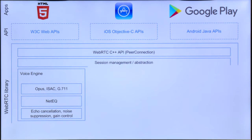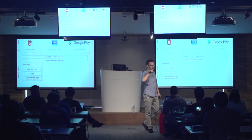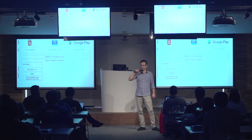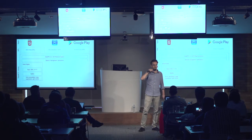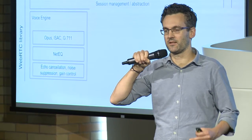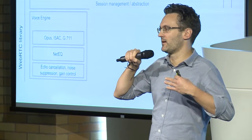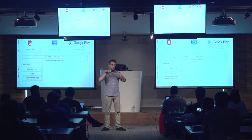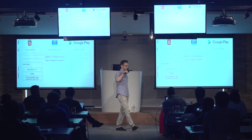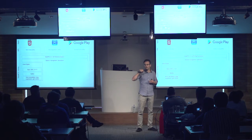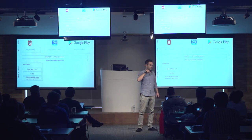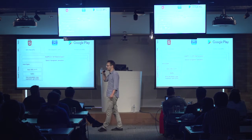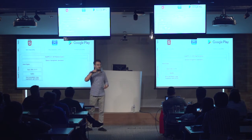Below that are three big components. One is the voice engine, which includes all the audio codecs: OPUS, iSAC, and G.711. There's also a jitter buffer called NetEQ — the NetEqualizer — which takes care of incoming packets, doing packet concealment if packets are lost and managing variability in packet delivery. We also address hard signal processing problems in software: echo cancellation, noise suppression, and gain control, which help make audio great and fix problems with different hardware.